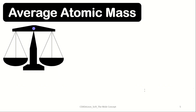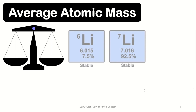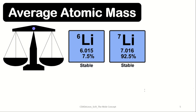But how are the atomic mass values written in the periodic table? It has to do with the natural abundance of each isotope for each element. Take lithium as an example. There are two known isotopes of lithium: lithium-6 and lithium-7. Lithium-6 has a natural abundance of 7.5%, while lithium-7 has a natural abundance of 92.5%. To determine the average atomic mass, we need to consider the natural abundance of each isotope.